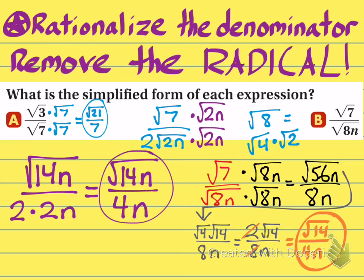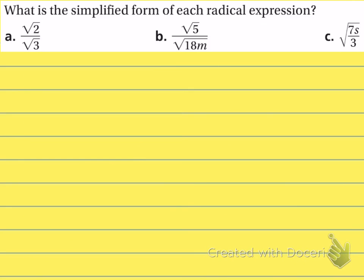So many of these problems are based on just understanding the concept and doing enough practice so you see all the different versions of what to expect. Here are 3 practice problems — pause the video and try your hardest. We didn't fully cover this in class; we will talk about it in class tomorrow. In part A, you have radical 3 in the denominator so multiply both numerator and denominator by radical 3. 2 times 3 is 6, but radical 3 times radical 3 is 3. You're done because 6 is not a perfect square and you can't end the problem with a radical in the denominator — it has to be a whole number.